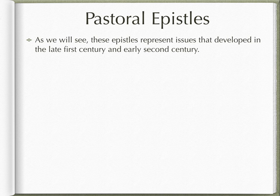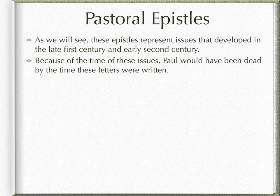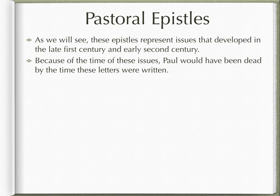These epistles represent issues that developed in the late 1st century and early 2nd century of the Common Era. Because of the timing of these issues, Paul would have been dead by the time these letters were written. Paul was, in church tradition, killed during the time Nero was the emperor of the Roman Empire. And the problems that are faced in these letters and the types of structures put in place indicate that they were much later than when Paul would have lived.